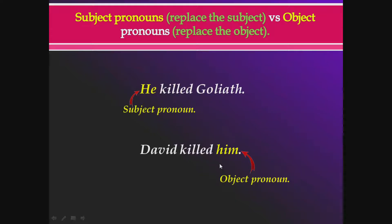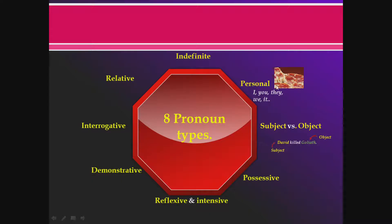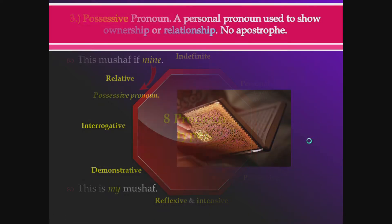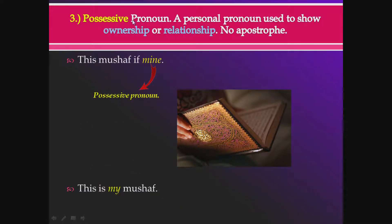'He killed Goliath' — 'he' is a subject pronoun replacing the subject David. 'David killed him' — 'him' is an object pronoun replacing the object Goliath. The subject pronoun replaces the subject and the object pronoun replaces the object of a sentence. That's it for personal pronouns and subject versus object pronouns.